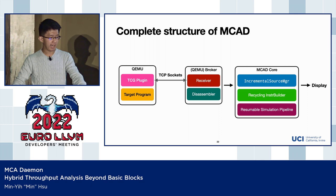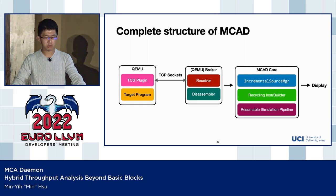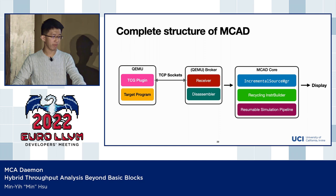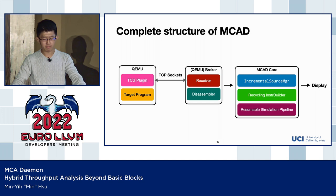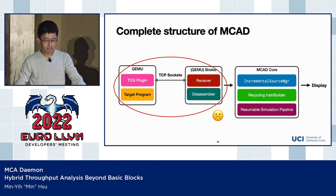Now we have a complete picture of MCAT. From left to right: QEMU collects execution traces via the TCG plugin, sends them to the broker which disassembles them, and sends into the MCAT core — mostly the MCA libraries with the important modified components we introduced to make it scale better. Finally, we display the results.